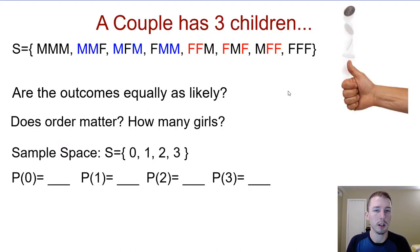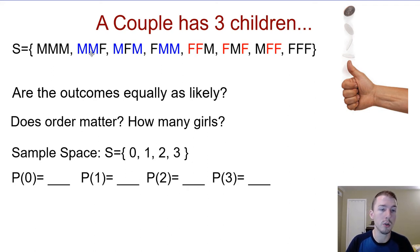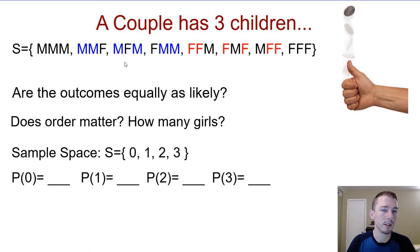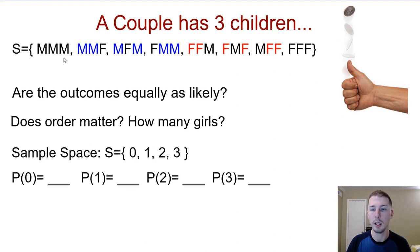Let's go back to the original question: a couple has three children — what are all the possible outcomes of the sexes where the order matters? We could have three males, two males and a female (where the female is the youngest, middle, or oldest), two females (where the male is the youngest, middle, or oldest), or three females. If the order doesn't matter and we're just asking about combinations, there are three ways to have one female and three ways to have one male, but only one combination of three females and only one of three males.